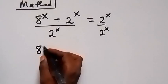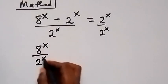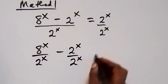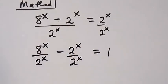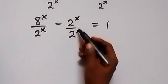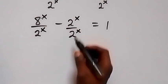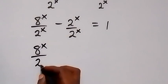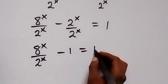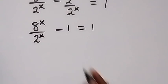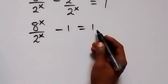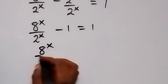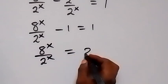We separate the terms: 8 raised to power x over 2 raised to power x, minus 2 raised to power x over 2 raised to power x, equals 1. Since 2^x over 2^x is 1, this becomes 8 raised to power x over 2 raised to power x minus 1 equals 1. Moving minus 1 to the other side gives us 8 raised to power x over 2 raised to power x equals 2.